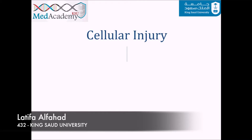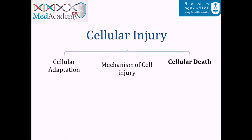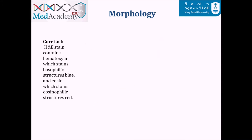In cellular injury, we are at the third part of this lecture: cellular death. We're going to start with necrosis, which is the first type of cellular death. Before a cell becomes necrotic, it may be under a reversible kind of injury that gives the cell different morphological appearances. It is essential to differentiate between the morphology of a reversibly damaged cell and a necrotic cell. A reminder that H&E stain contains hematoxylin, which stains basophilic structures blue, and eosin, which stains eosinophilic structures red.